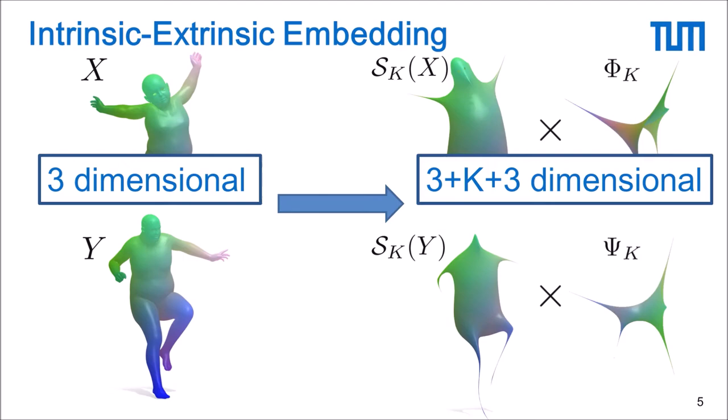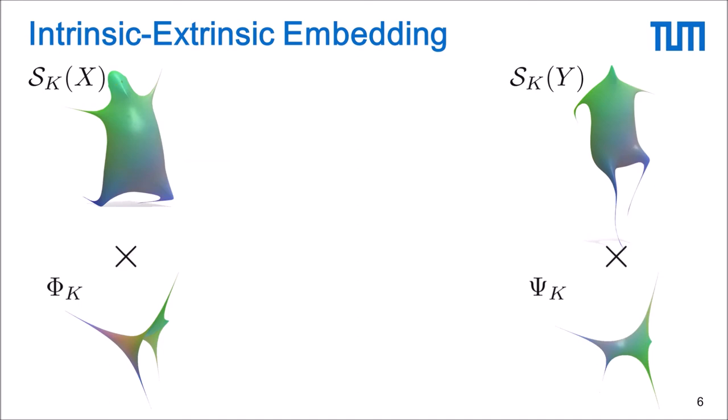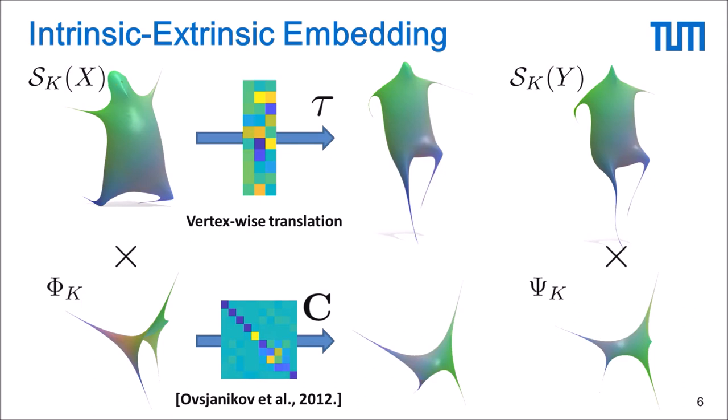Now we look at the two shapes in this product space and we will define a transformation that aligns the two shapes, both the extrinsic coordinates and the intrinsic spectral features. For the extrinsic part this is a linear transformation in some low rank basis that tries to align it with the coordinates of the reference shape y. For the spectral features this is exactly a functional map.